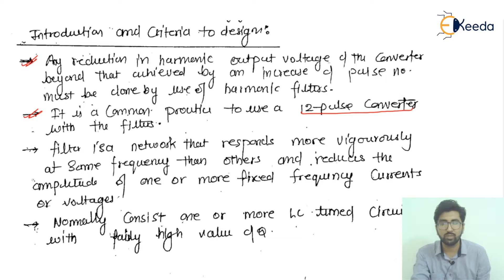A filter is a network that responds more vigorously at some frequencies than others. It can choose the wanted frequencies which are desirable to your system, supply lines, and equipment, while filtering out unwanted frequencies that are actually harmonics. It reduces the amplitude of one or more fixed frequencies, decreasing the sum of values.